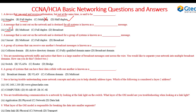Multicast is a message that is sent to a group of devices — not all, but a group. For example, if there are 20 devices, a multicast message can be sent to 15, 10, or 8 — a group of devices.